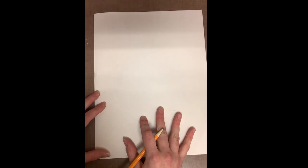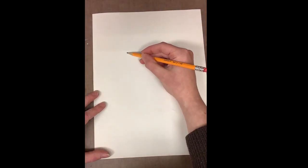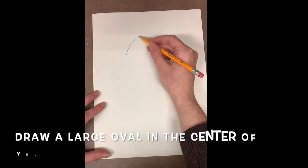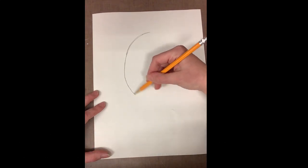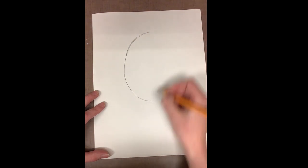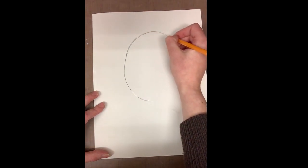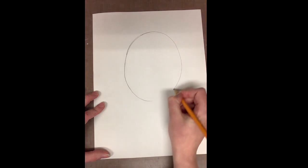We'll be drawing with a pencil today and with everything that you draw, begin really lightly just in case you make a mistake and you need to erase. We'll start by drawing a large oval in the center of our page to be the shape of our head. Your head is like an oval or an egg shape.